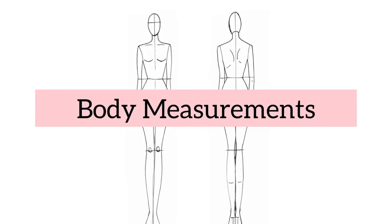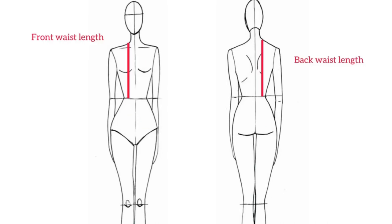For this simplified dartless bodice block, we would need a few measurements. The first measurement is the front waist length, which is taken from the highest point of your shoulder to your waist. The highest point of your shoulder is the point very close to your neck. We wouldn't be needing this measurement to draft this bodice — we only need it for reference purposes.